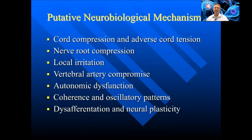A number of putative neurobiological mechanisms associated with spinal subluxation have been described. These include cord compression and adverse cord tension, nerve root compression, local irritation, vertebral artery compromise, autonomic dysfunction, alterations in coherence and oscillatory patterns, and disafferentation and neuroplasticity.